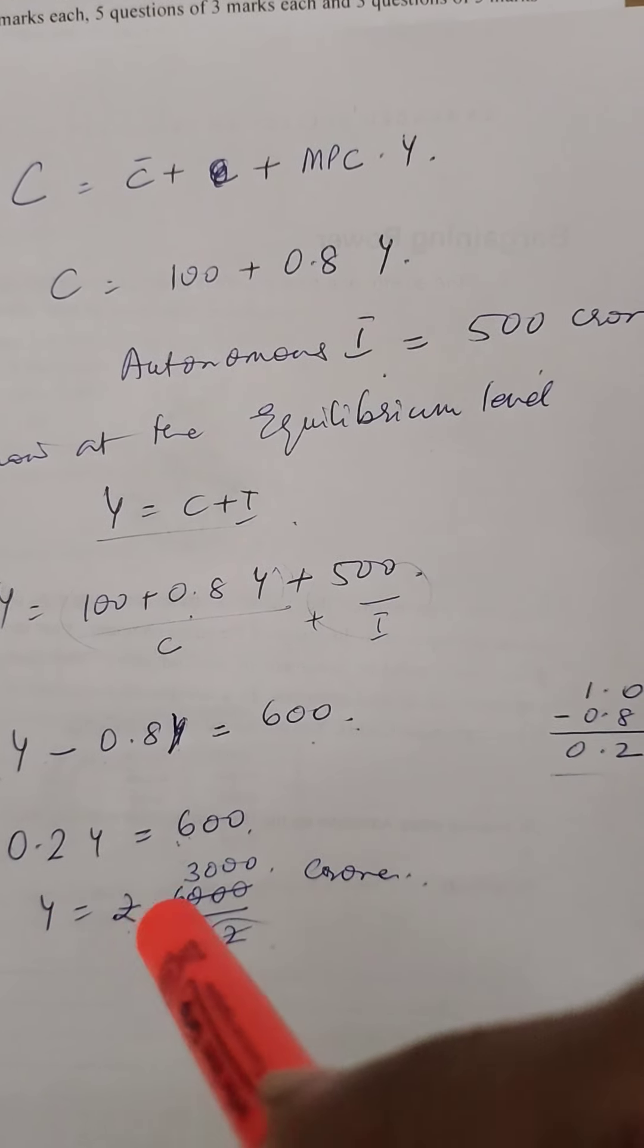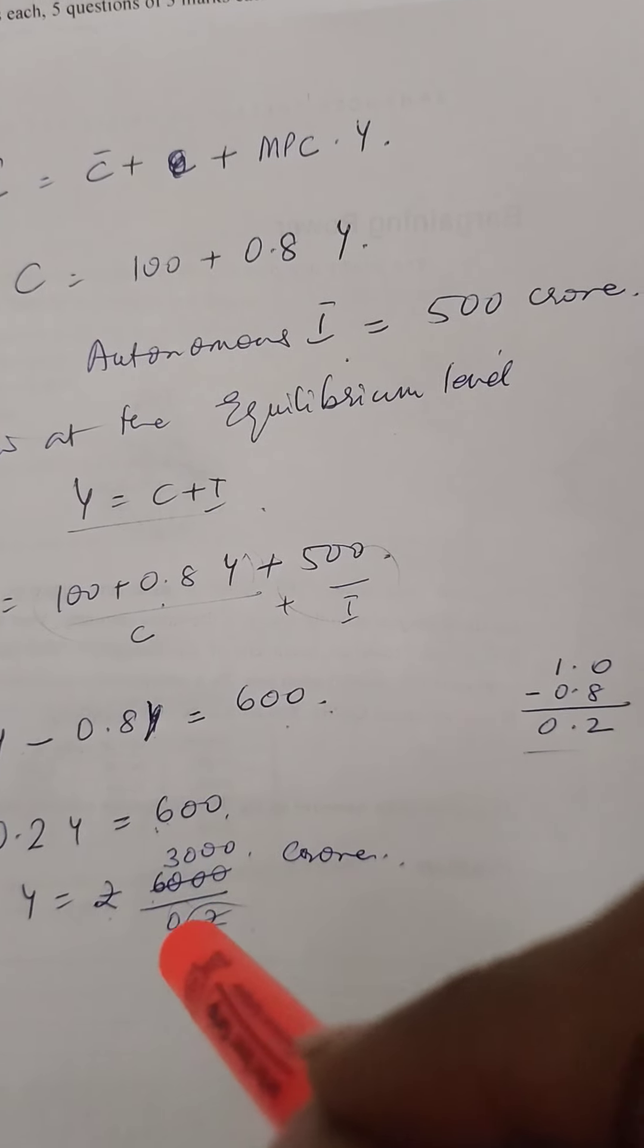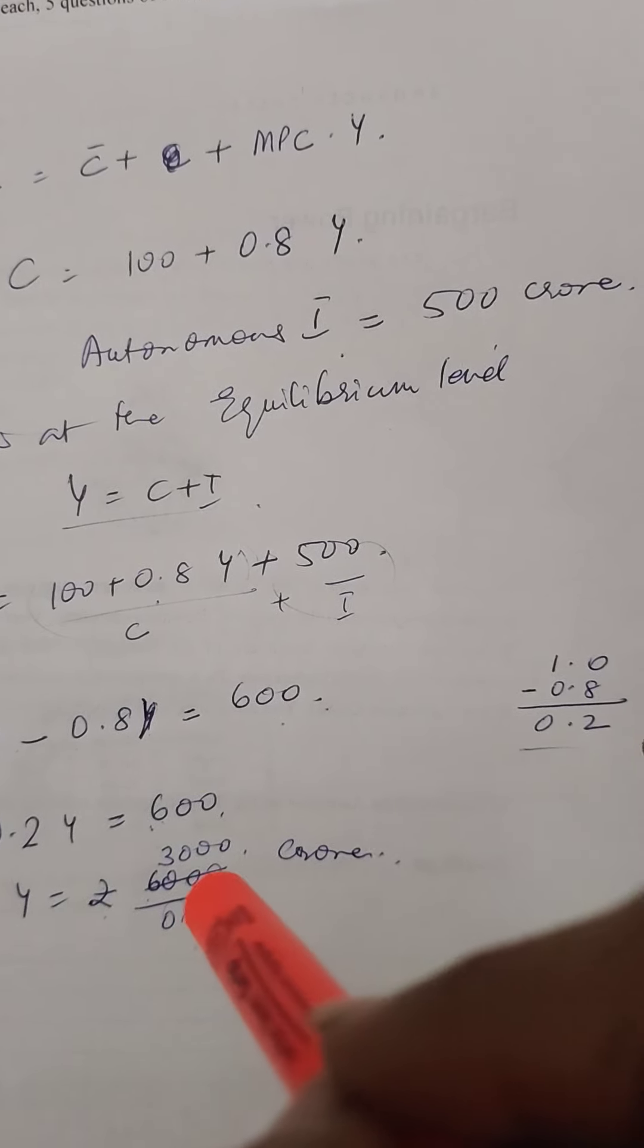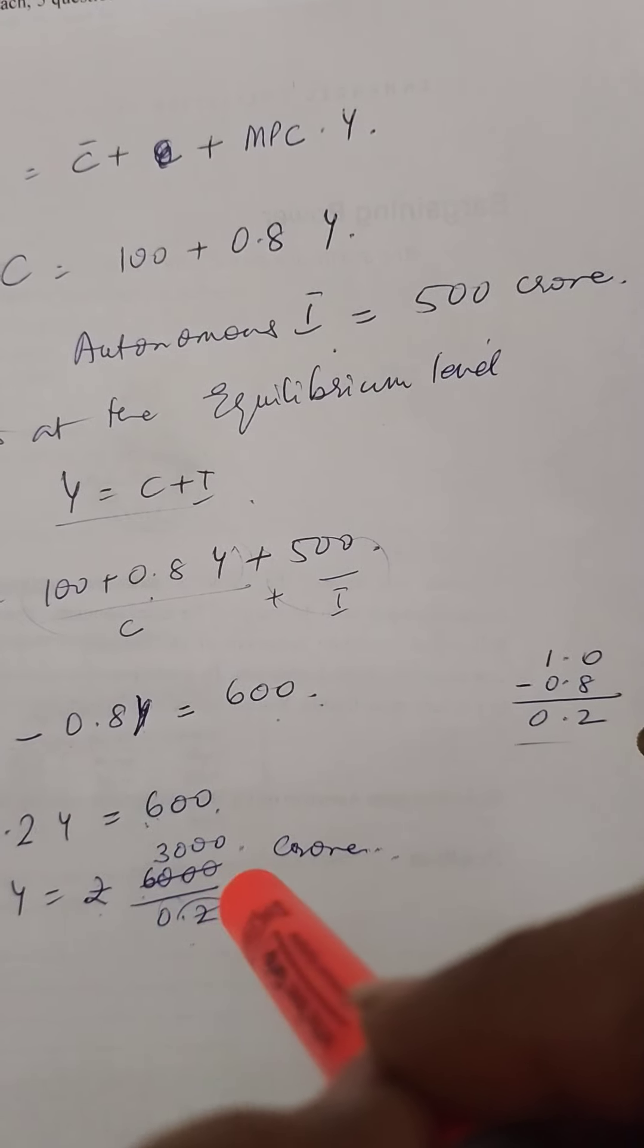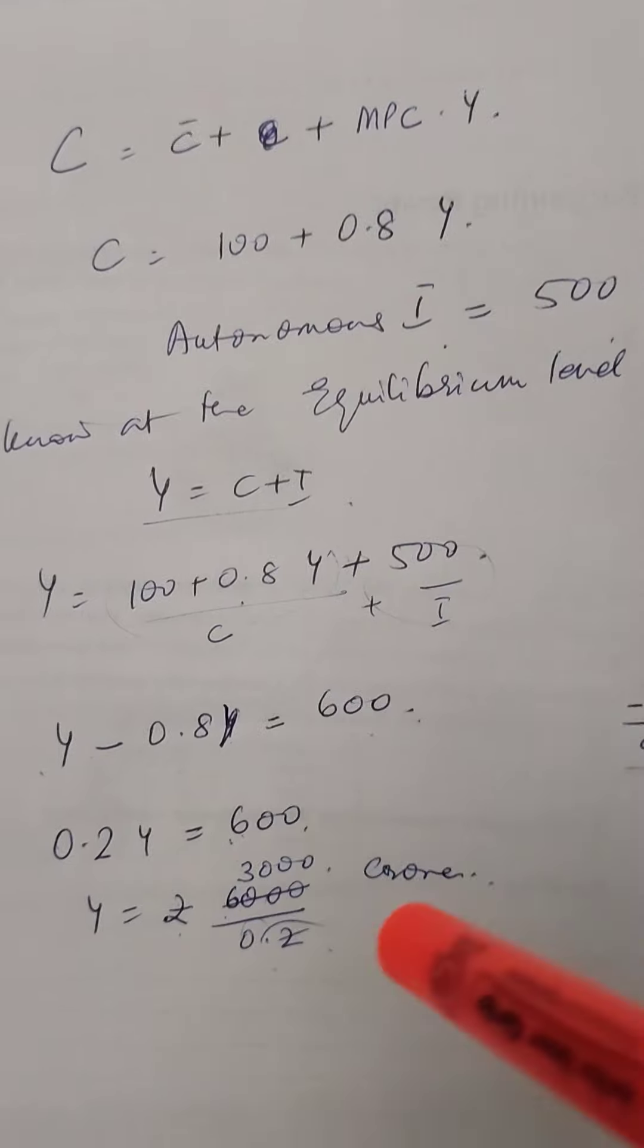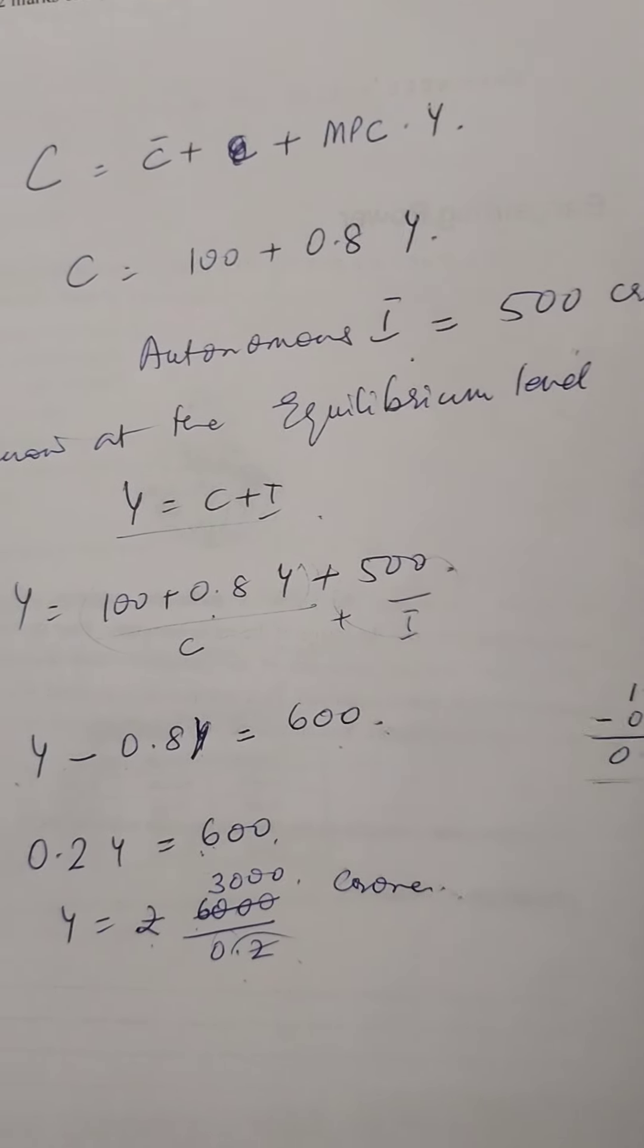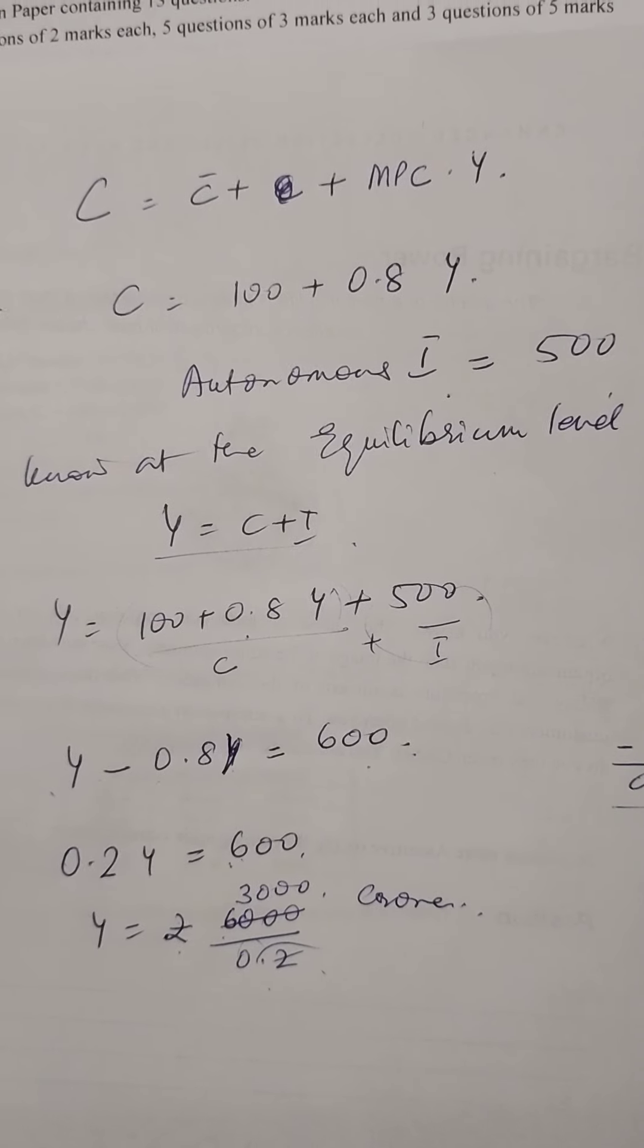So Y = 600 divided by 0.2. 600 divided by 2 is 3,000 crores. So that is the answer. Income = 3,000 crores. And you get your two marks for it.